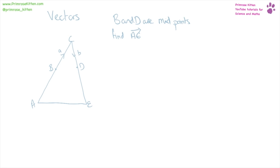B and D are midpoints on our triangle. B is the midpoint between A and C, and D is the midpoint between C and E. We need to find the vector describing the movement from A to E.